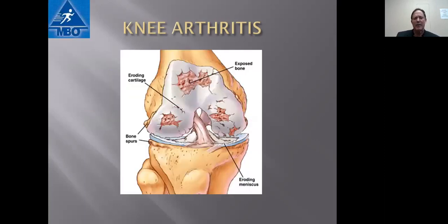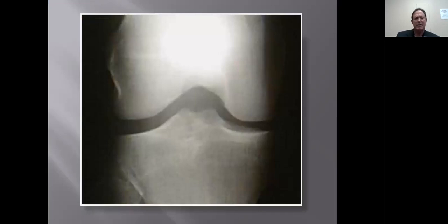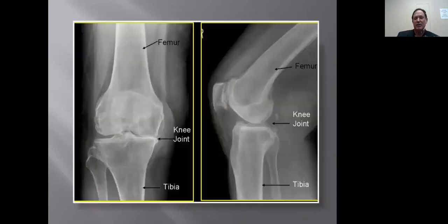An arthritic knee is like someone sanded down the normally shiny cartilage on the end of a bone. On X-ray, a normal knee shows nice clear spaces between the bones — that's articular cartilage. With severe arthritis, you get bone on bone where the cartilage is completely gone, along with some narrowing and irregularity, and bone spurs visible on the lateral view of the kneecap. This is someone who has fairly advanced arthritis.